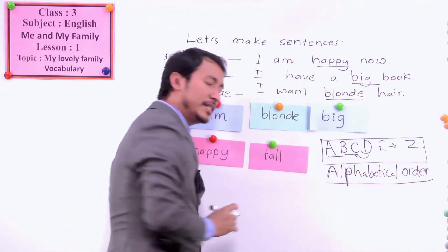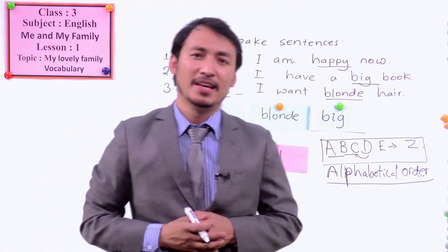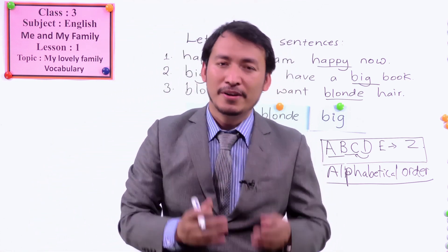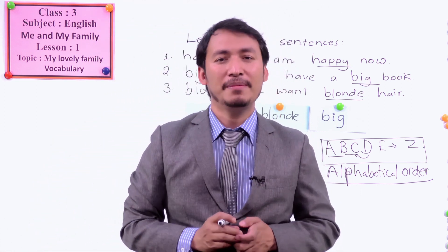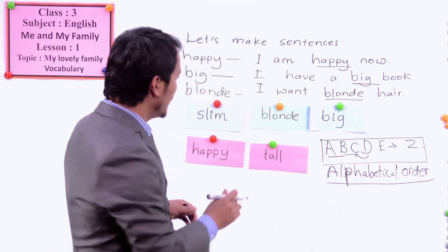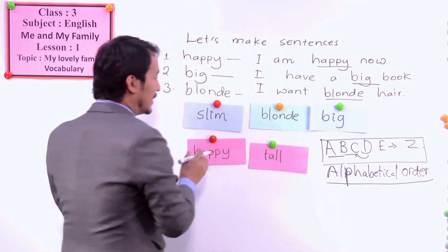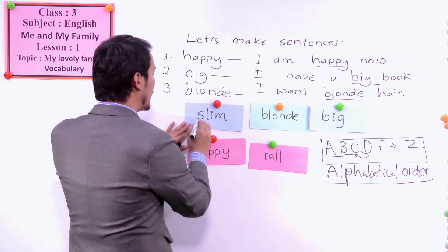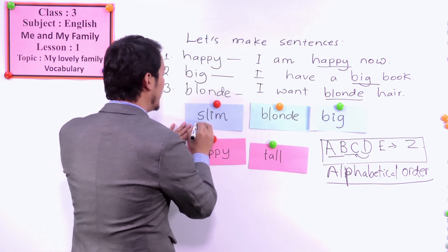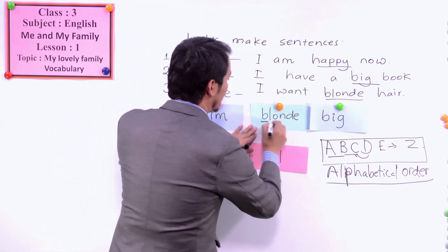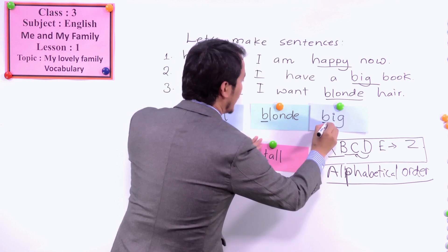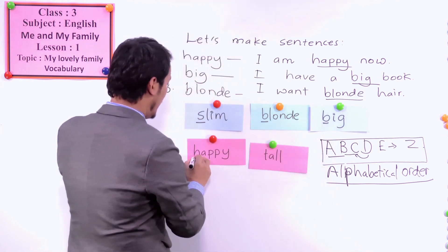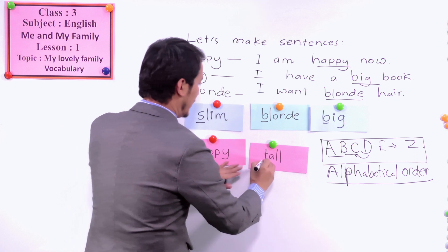What is alphabetical order once again? The order of alphabets — A, B, C, D. Now let's try to see: you have to look at the first letter of the words. Look here — we have S, B, B, H, and T. Which one do you think is the beginning letter? B is coming first, and another B is here.